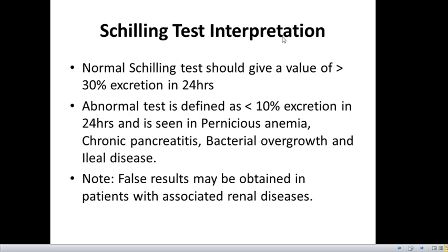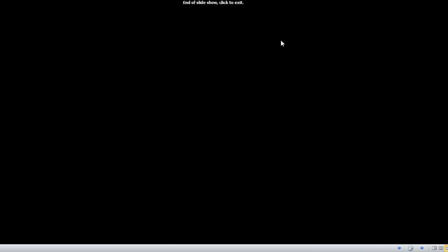For interpretation: a normal Schilling's test gives a value of greater than 30% excretion in 24 hours. As noted, there is no single universally fixed normal value — it depends upon the books, authors, or the laboratory's SOPs and procedures. An abnormal test is defined as less than 10% excretion in 24 hours and is seen in pernicious anemia, chronic pancreatitis, bacterial overgrowth, and ileal disease. Note that false results may be obtained in patients with associated renal diseases. That is all about Schilling's test.